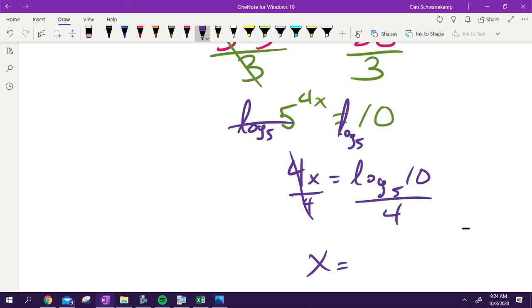So on tomorrow's test, the one thing that you do have to pay attention to is on a question like this, I will ask you for both the exact and the approximate value. When I ask for the exact value, that means before you type it into your calculator, basically. So if I'm asking for the exact value, it is this guy right here: log base 5 of 10 divided by 4. Basically just saying, hey, I want to see it that way, so you didn't just graph it on your calculator and get me the decimal.